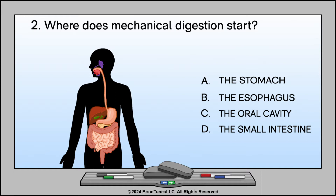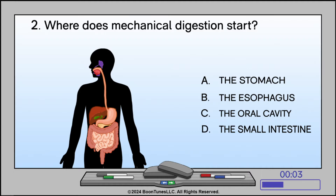Where does mechanical digestion start? A. The stomach. B. The esophagus. C. The oral cavity. D. The small intestine. The answer is C: The oral cavity.